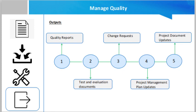Project document updates include the issue log — as a result of audits done as part of the quality assurance process, new issues may be raised and recorded in the issue log. Information is added to the lessons learned register on challenges encountered during the quality management process and approaches that worked well for managing quality. New risks identified during this process are recorded in the risk register to be managed using the risk management process.